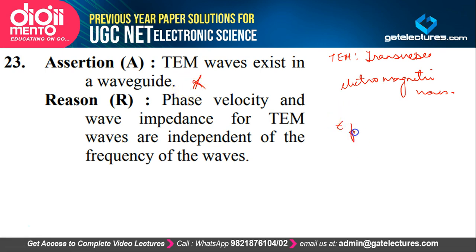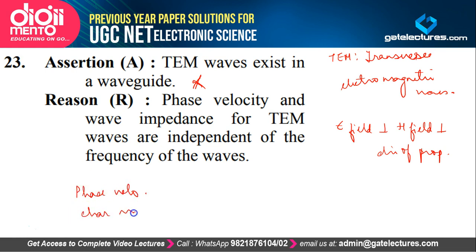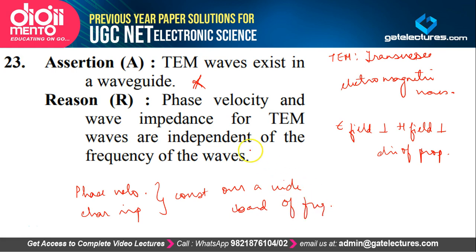TEM waves can exist in parallel plate waveguides, coaxial cables, and strip lines. The reason states that phase velocity and characteristic impedance remain constant over a wide band — meaning they are independent of frequency. This is a correct characteristic of TEM waves. Assertion is wrong, reason is correct — the answer is option D.